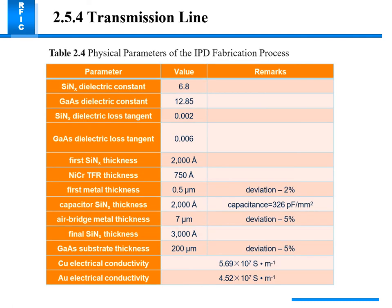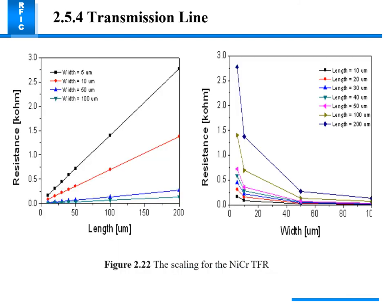Physical parameters of the IPD fabrication process: scaling of the NiCr TFR shows that at 5 micrometer width the resistance is high, at 10 micrometer width resistance decreases, and at 100 micrometer width resistance is very low. Width is inversely proportional to resistance.